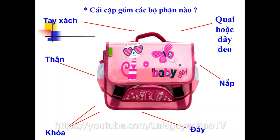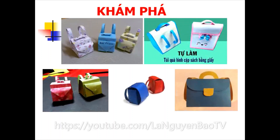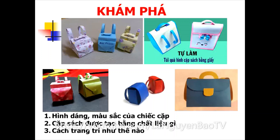Và bây giờ để các con thấy được sự phong phú đa dạng của một số kiểu dáng cặp sách được tạo hình theo hình thức tạo hình 3D, cô mời các con vào hoạt động đầu tiên - Hoạt động 1: Khám phá. Cô mời các con quan sát lên màn hình. Đây là một số chiếc cặp sách được tạo theo hình thức 3D. Các con hãy quan sát thật kỹ và cho cô giáo biết: hình dáng, màu sắc của chiếc cặp như thế nào? Cặp sách được tạo bằng chất liệu gì? Và cách trang trí của những chiếc cặp trên. Các con hãy nhấn nút tạm dừng và suy nghĩ cho cô giáo trong vòng 2 phút nhé.